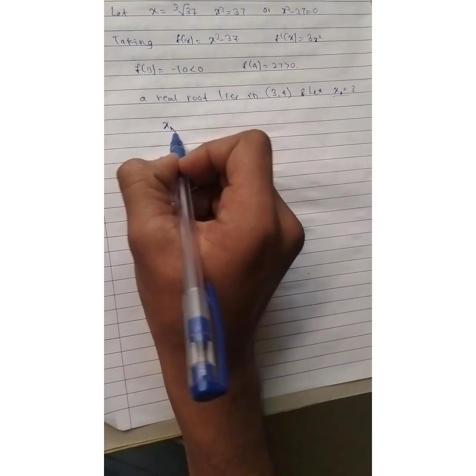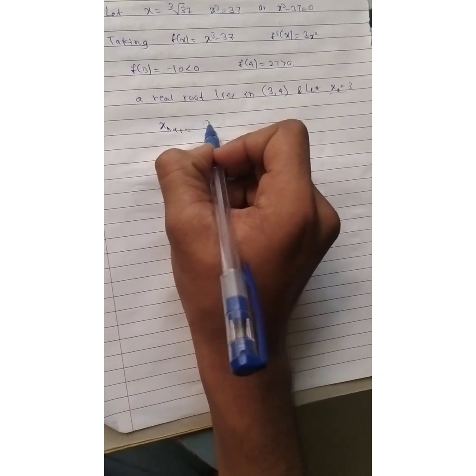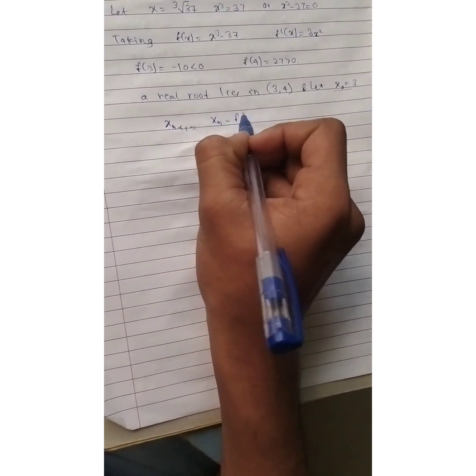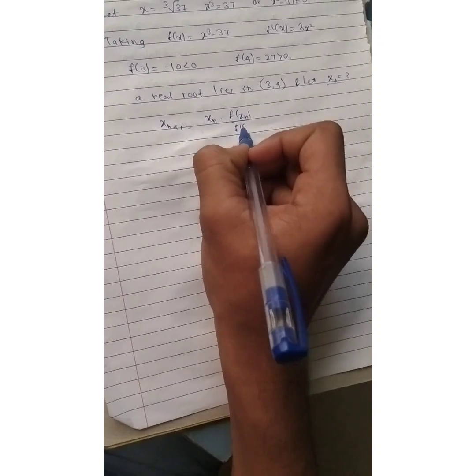The basic formula is xn plus 1 is equal to xn minus f of xn divided by f dash of xn.